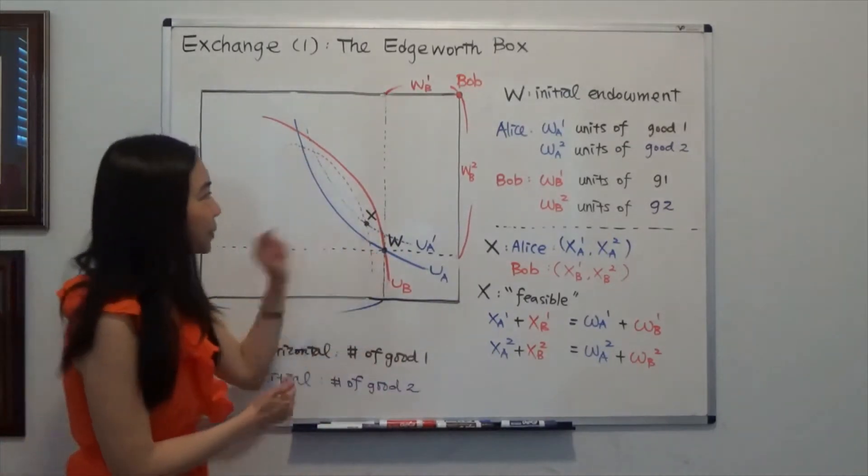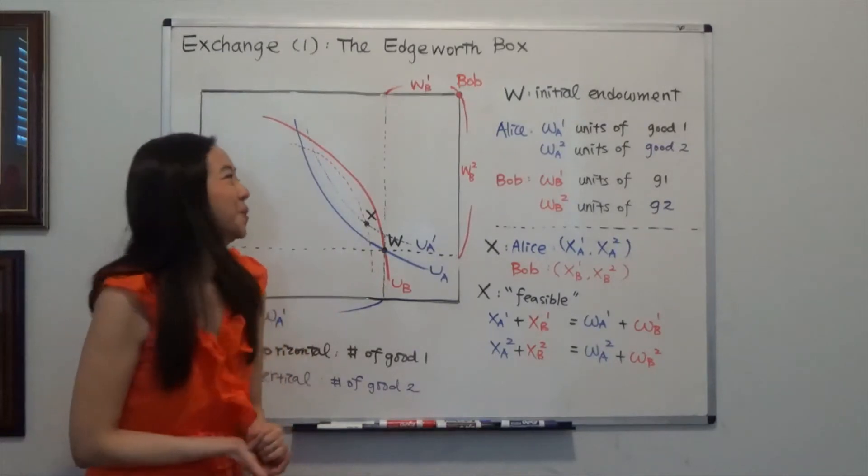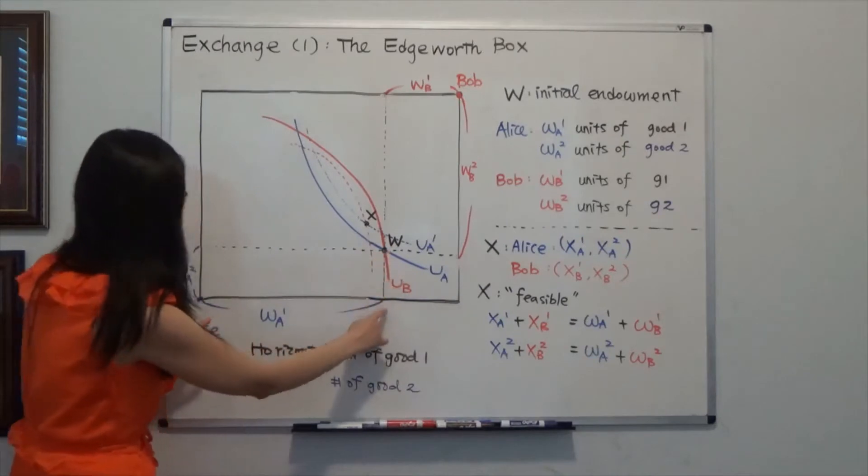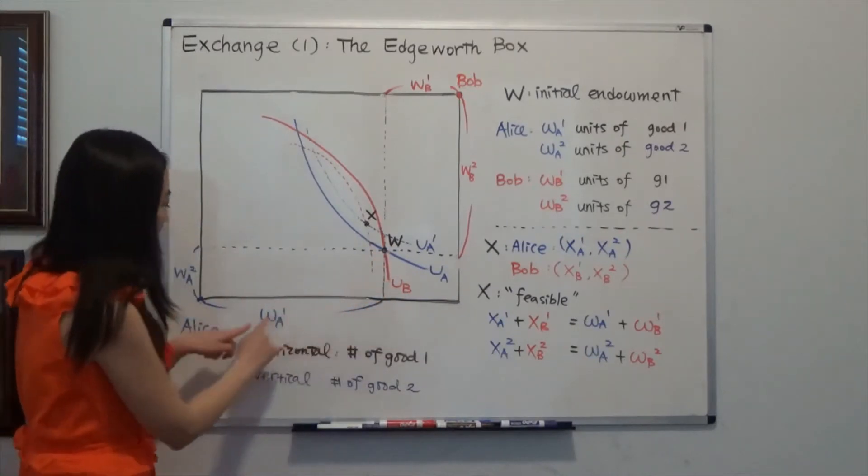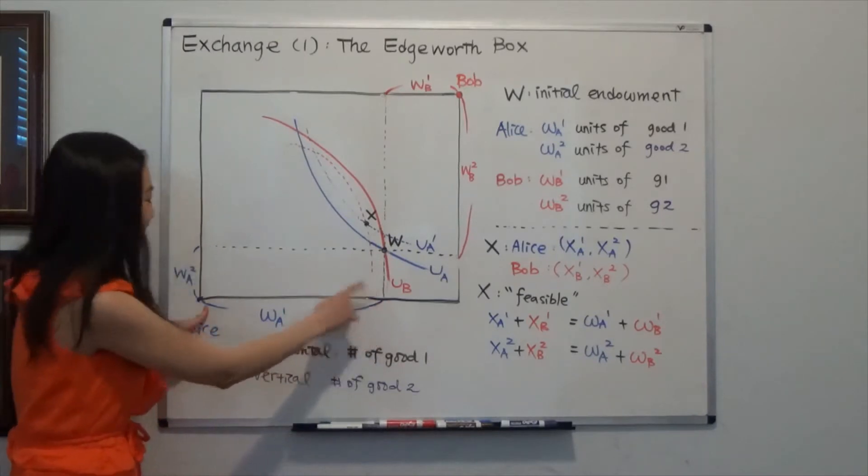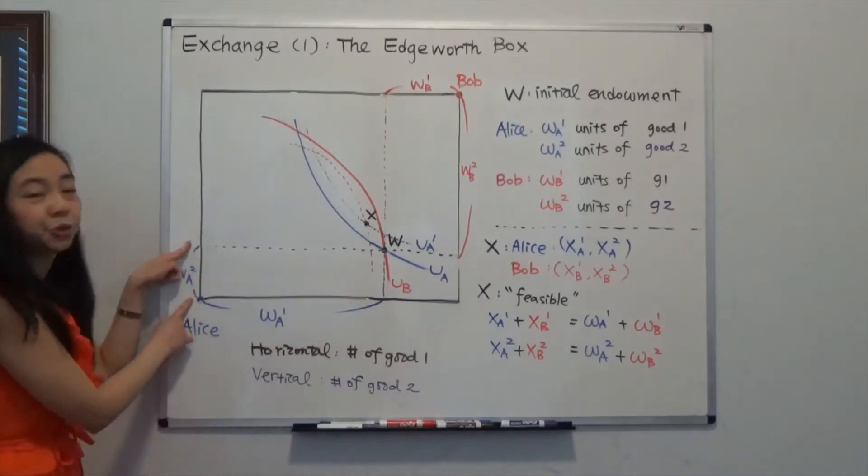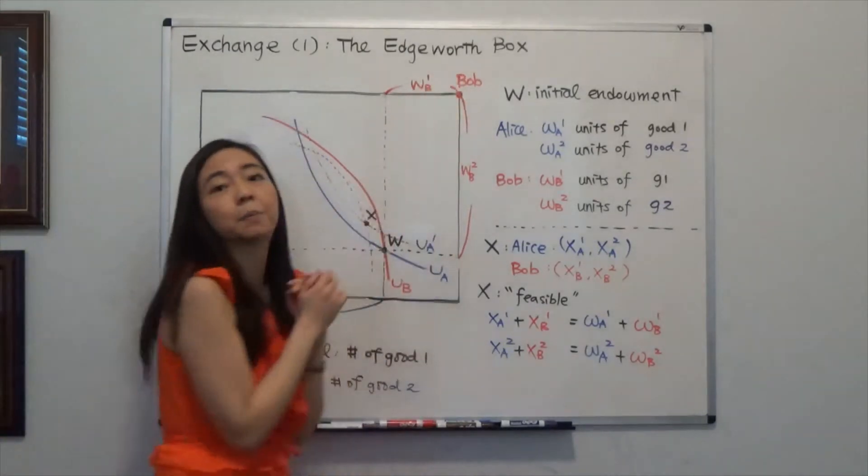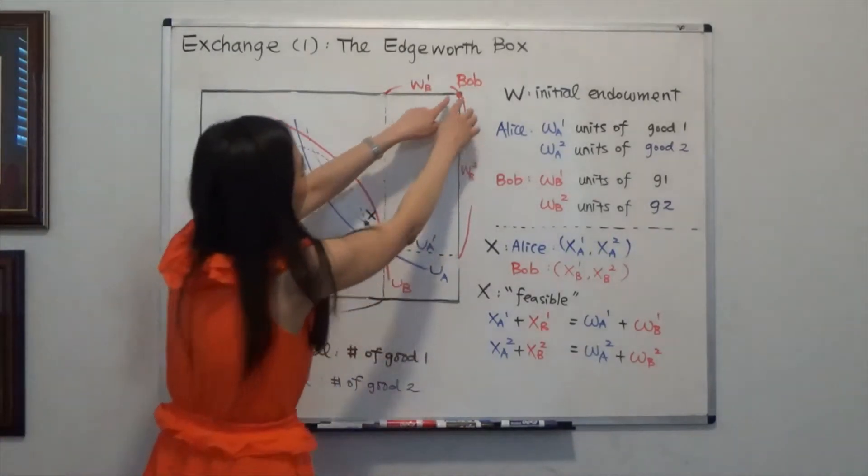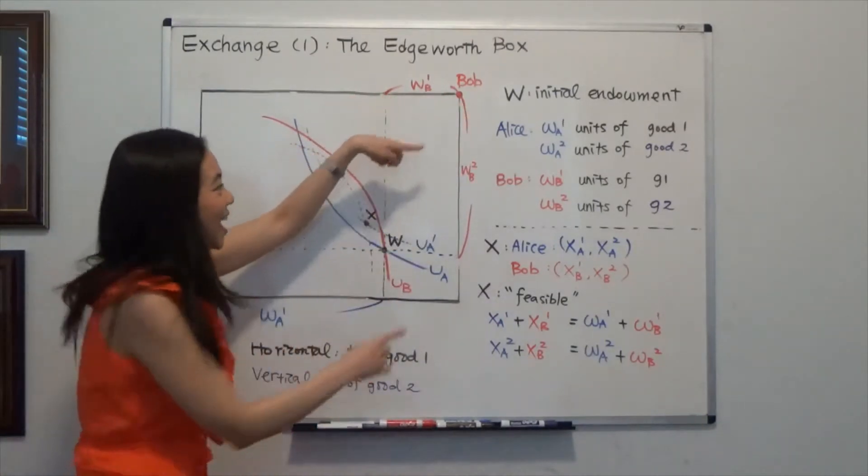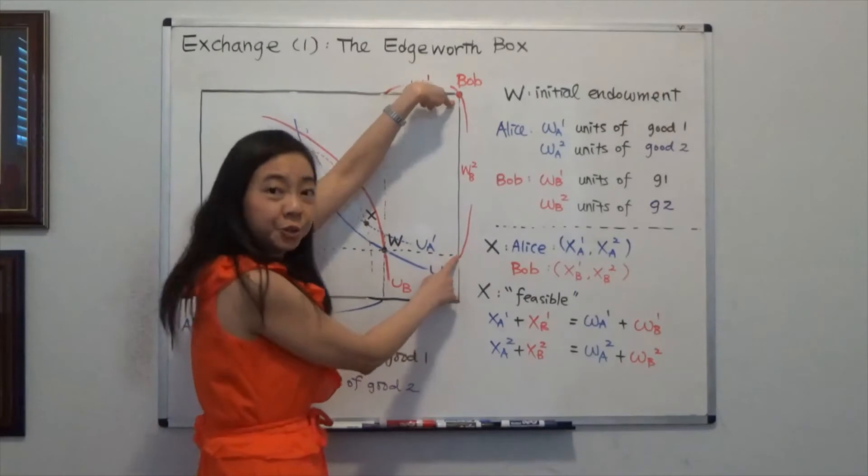So let W be the initial endowment. We can see W is here and it shows that Alice's initial endowment is WA1 units of Good 1 and WA2 units of Good 2. Now what about Bob? Bob you need to look at from the top right. So Bob has WB1 units of Good 1 and WB2 units of Good 2.